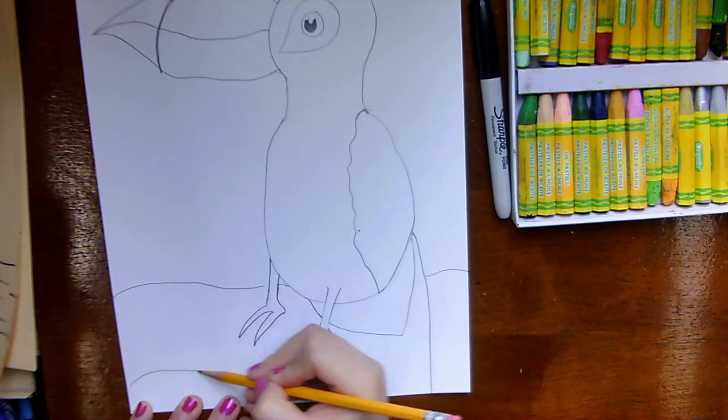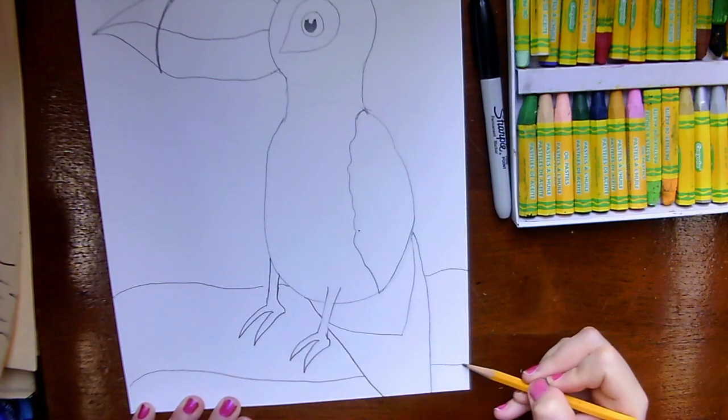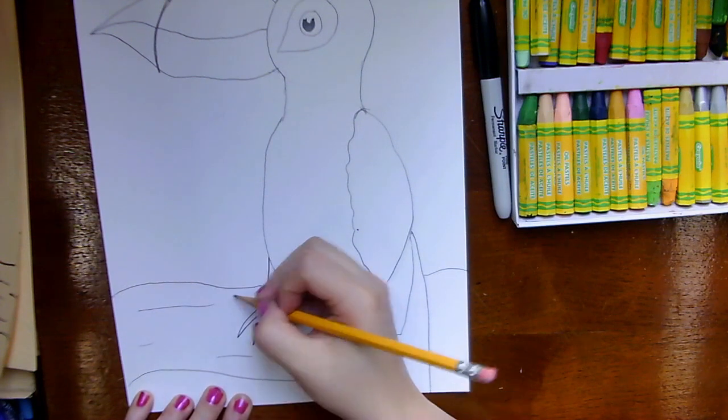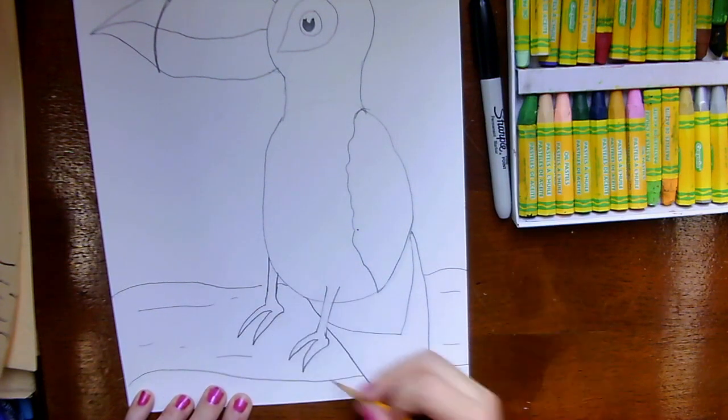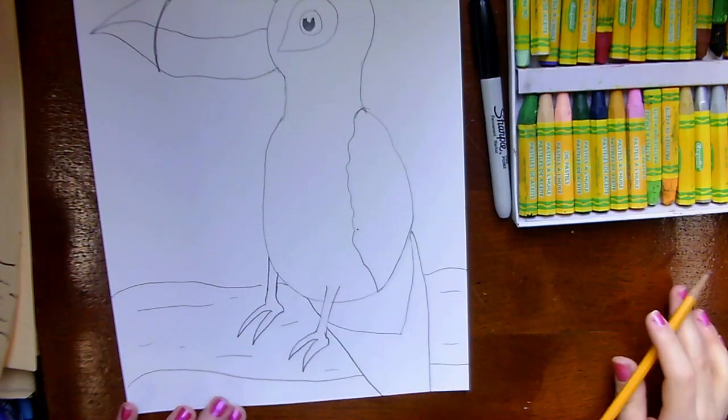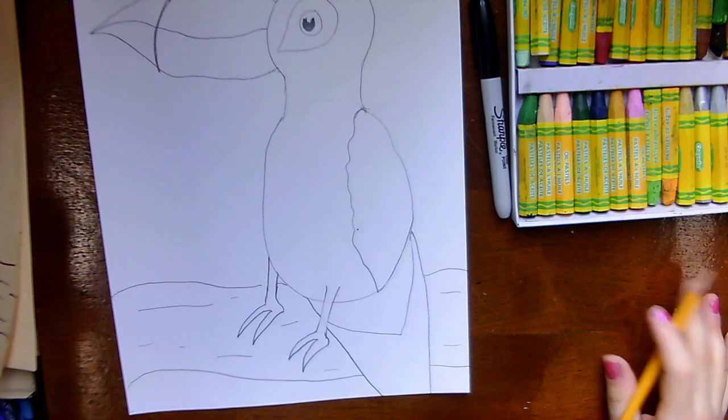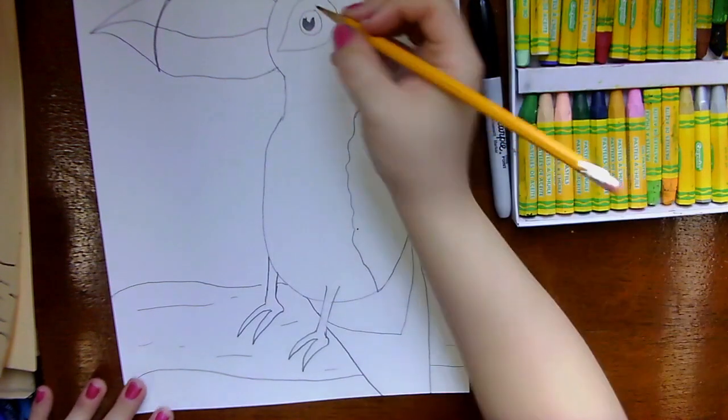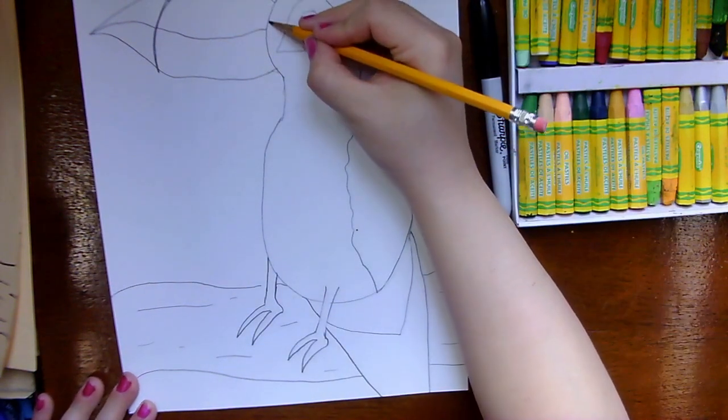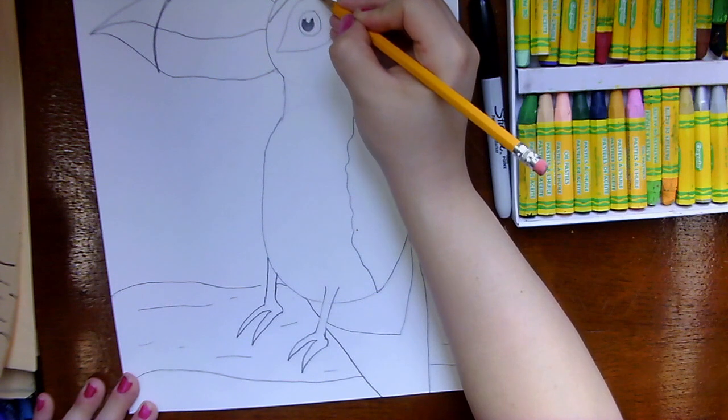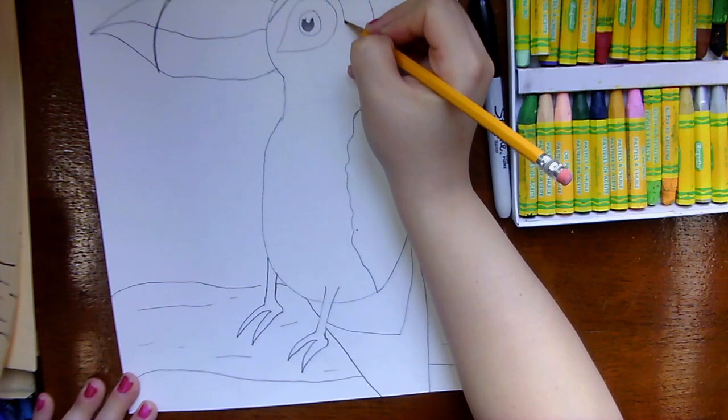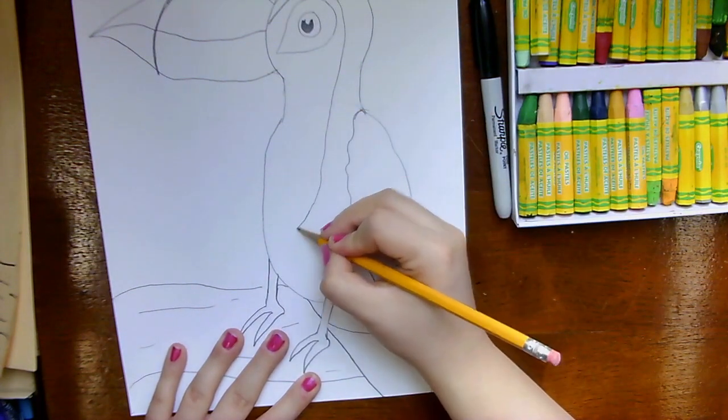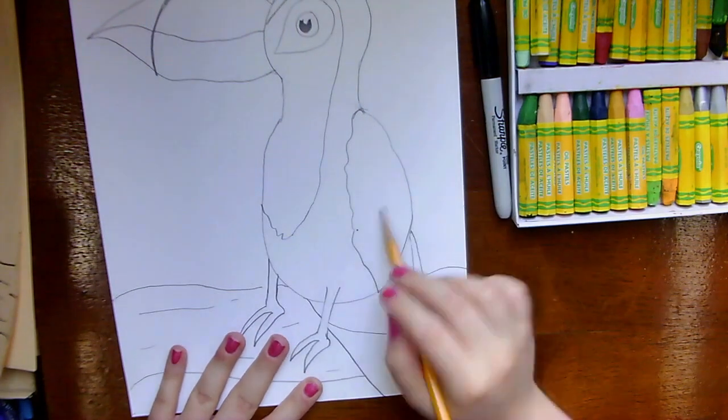I'm going to do the same thing on the bottom I don't want to go through his tail I just want to stop and continue on the other side. You can even draw some lines on the branch to show some texture. There's one more line that I want to draw for my toucan and that is the black part of his face so he kind of has this curvy shape that goes around his eye and down and you can make it fuzzy kind of like the wing.